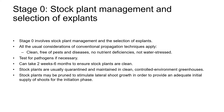Stage zero involves stock plant management and the selection of explants. Explants are the plant material that will be used for propagation. Stock plants are usually quarantined and maintained in clean, controlled environment greenhouses. If stem tissue is going to be used, the plants may be pruned to stimulate lateral shoot growth in order to provide a good initial supply of shoots for the next stage, stage one.